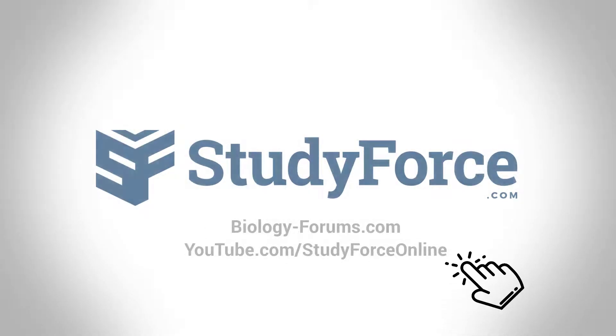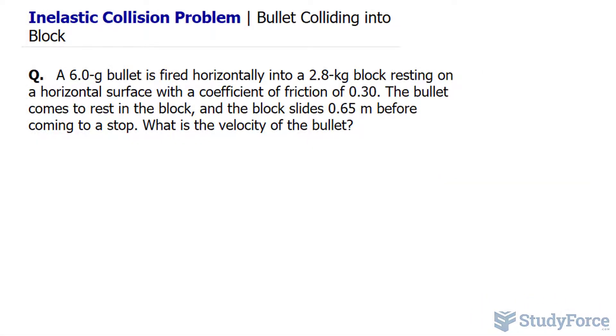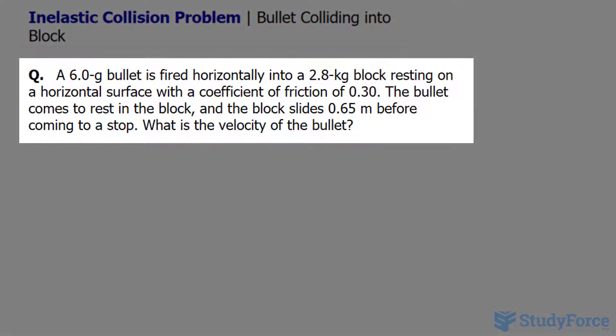In this lesson, I'll show you how to solve an inelastic collision problem, this time involving a bullet colliding into a block. The question reads: a 6.0 gram bullet is fired horizontally into a 2.8 kilogram block resting on a horizontal surface with a coefficient of friction of 0.3. The bullet comes to rest in the block, and the block slides 0.65 meters before coming to a stop. What is the velocity of the bullet?